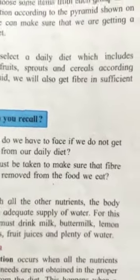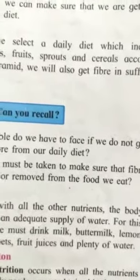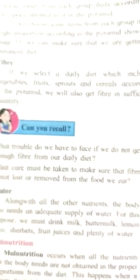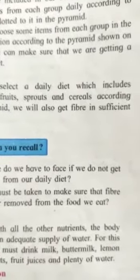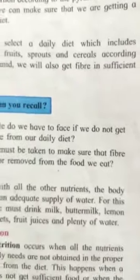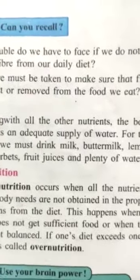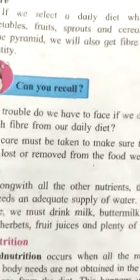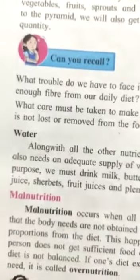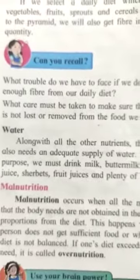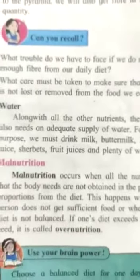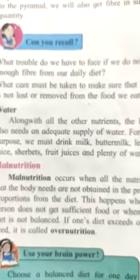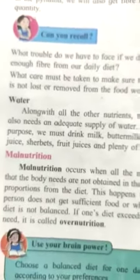Fiber is an indigestible carbohydrate — a type of carbohydrate that cannot be digested. We find it in fruits, sprouts and cereals. Next is water. Water is the universal solvent; almost all substances can dissolve in water. We should drink a proper amount of water, as it is most essential for our body.